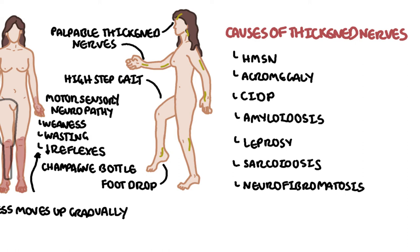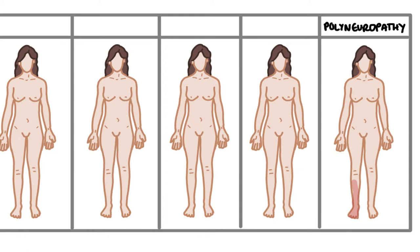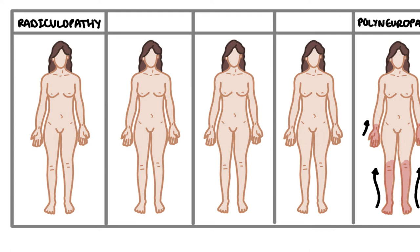It is important to understand that Charcot-Marie-Tooth disease is a motor and sensory polyneuropathy — it causes distal weakness and sensory changes which gradually move up as it worsens. This is as opposed to a radiculopathy, which affects a particular nerve root at the spinal cord, such as a disc herniation causing impingement of the nerve root L4.